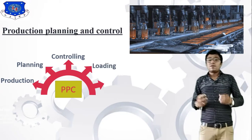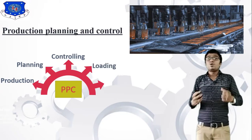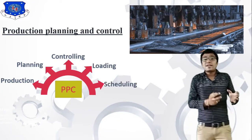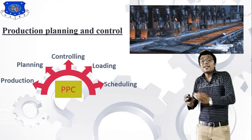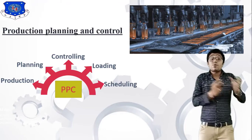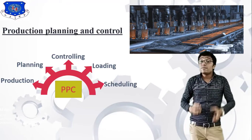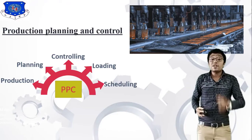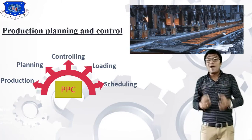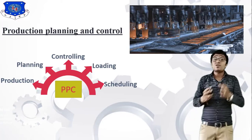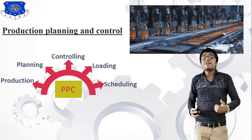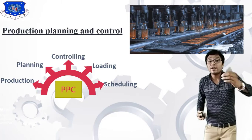The fourth element is loading, and scheduling — both loading and scheduling are very important and related to production planning and control, which we will study in this chapter. Production planning and control ultimately improves our productivity and profit.